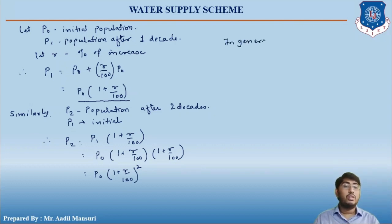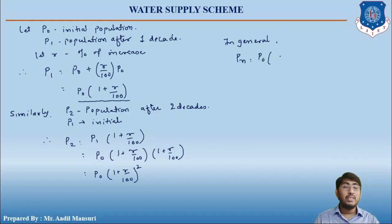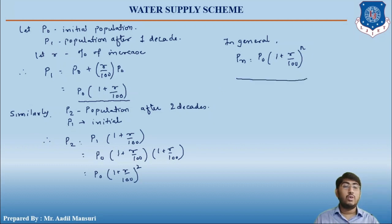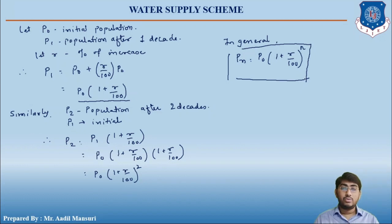In general, we can say that the population after n decades will be equals to P0 into (1 + r/100) raised to n. This is the equation for finding the population after n decades using the geometrical increase method. Understood, students?